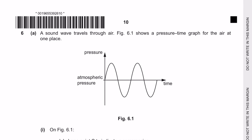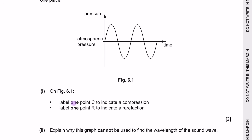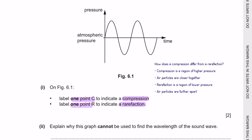Question 6. A sound wave travels through the air. Figure 6.1 shows a pressure–time graph. Part 1: Label one point C for compression and one point R for rarefaction. Compression is a region of higher pressure, so label C at the highest point of the wave. Rarefaction is a region of lower pressure, so label R at the lowest point.